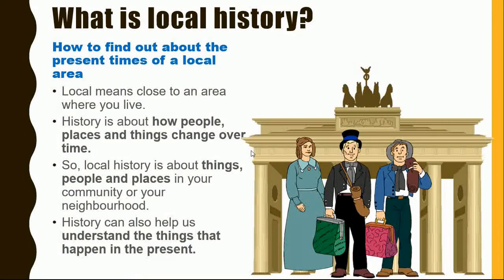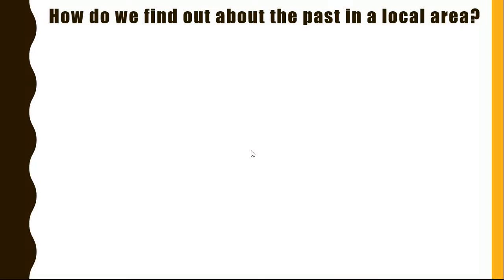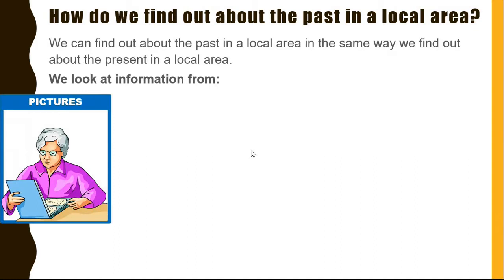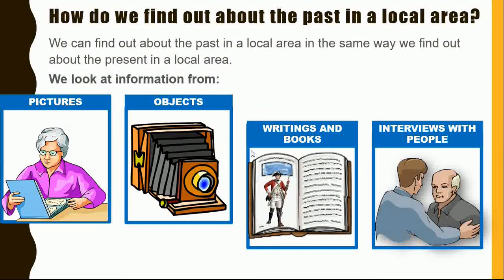History can also help us understand the things that happen in the present. How do we find out about the past in our local area? We can find out about the past in the local area in the same way we find out about the present in the local area. We look at information from pictures, objects, writings and books, as well as interviews with different people.